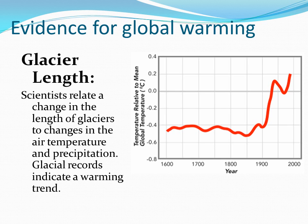Glacier length. Glacier length is a function of atmospheric temperatures and precipitation. The dynamics of glacier flow are well studied. A correlation of glacier length to past temperatures suggests a recent warming.